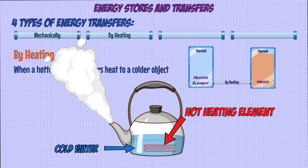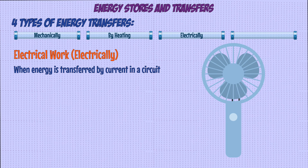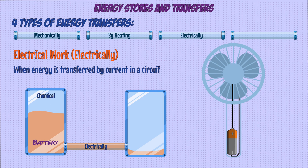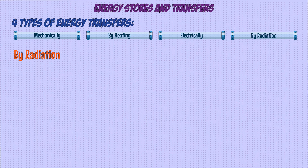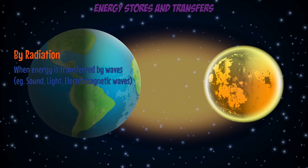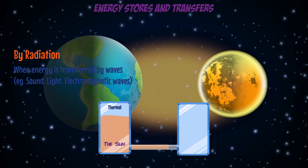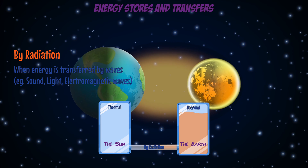You can also have energy transfer by electrical work, which is energy transferred by the flow of current in a circuit. For example, in a battery-powered fan, energy starts in the chemical energy store of the battery and is transferred electrically through the circuit to the kinetic energy stores of the fan blades to make them move. The final type of transfer is by radiation, when energy travels in the form of waves such as sound, light, or other electromagnetic waves. A good example is how the earth gets heat from the sun — energy from the sun's thermal store is transferred to the earth's thermal store by infrared radiation.